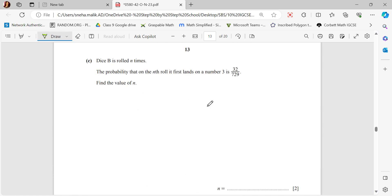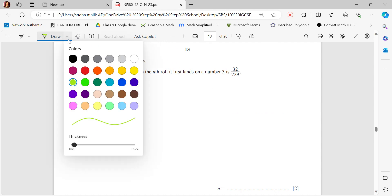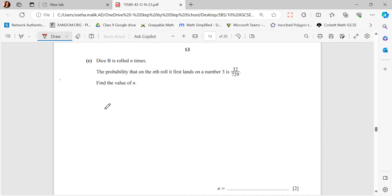This is a question which requires a little more deliberation. Dice B is rolled n times. The probability that on the nth roll it first lands on a number 3 is 32 by 729. Find the value of n. If I just talk about dice B, the output that is coming on dice B is a limited one because it's either showing a 2, a 3, or a 4. The probability of 2 is 1 by 6. The probability of 3 is 2 by 6, which is nothing but 1 by 3. And the probability of 4 is 3 by 6.